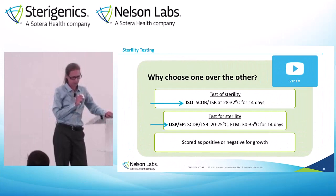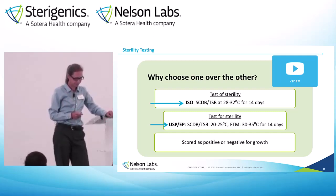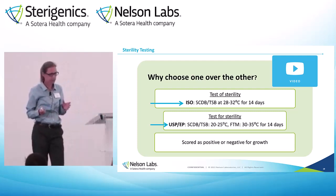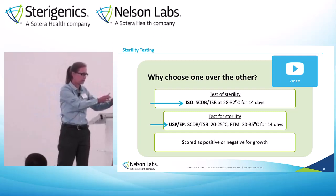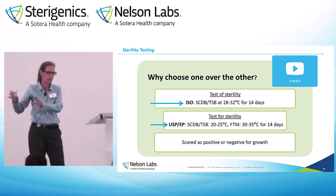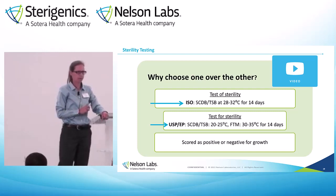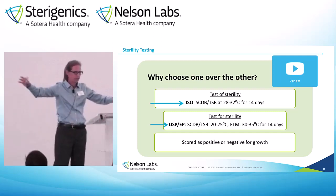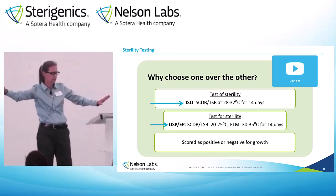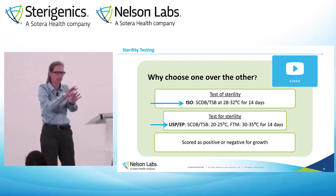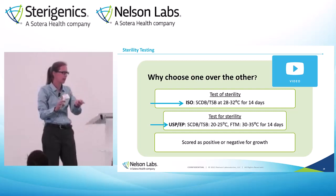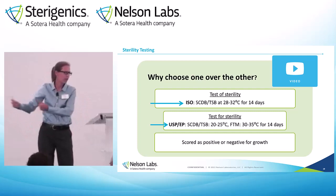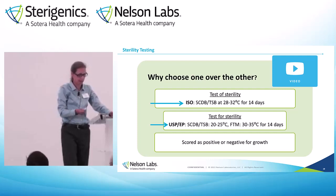Sterility testing — sometimes called a test of sterility, sometimes called a test for sterility. The ISO test, or test of sterility, is for terminally sterilized product. So you make the product, send it to the irradiator or the EO facility, it gets sterilized, and you follow the ISO method. The USP method is for aseptic processing — where you sterilize the container and the drug product or fill separately, then put those two together as cleanly as possible under conditions where you really hope no organisms get in.